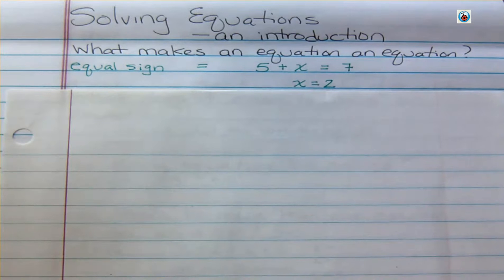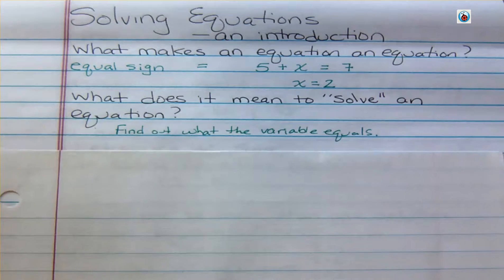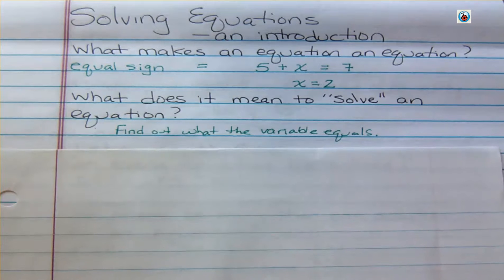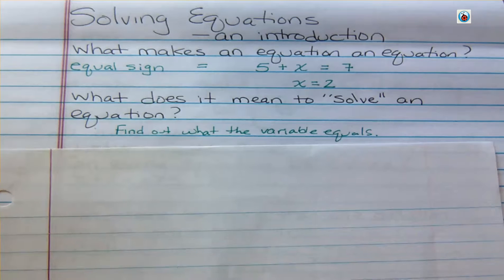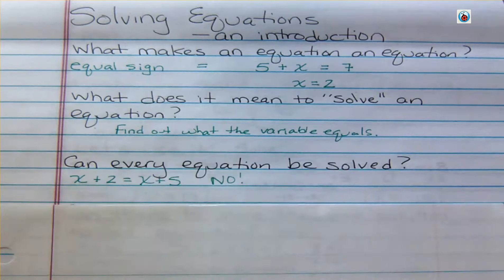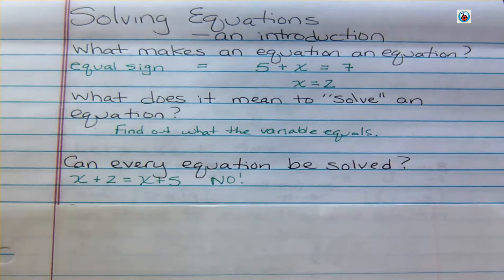What makes an equation an equation is an equal sign. When you want to solve an equation, it means find out what the variable equals. Not every equation can be solved, but the ones that you're going to be given in the beginning will be solvable.